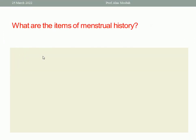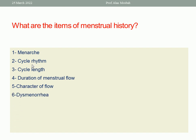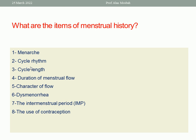Let us go to the next question: what are the items of the menstrual history? Menarche — the first menstruation in a girl's life. Cycle regularity — whether regular or irregular. Cycle length — from the first day of one cycle to the first day of the next. Duration of menstrual flow. Character of flow. Dysmenorrhea — positive or negative. The inter-menstrual period — whether free from pain, bleeding, or discharge. Use of contraception in the previous six months. And lastly, the first day of the last normal menstrual period.